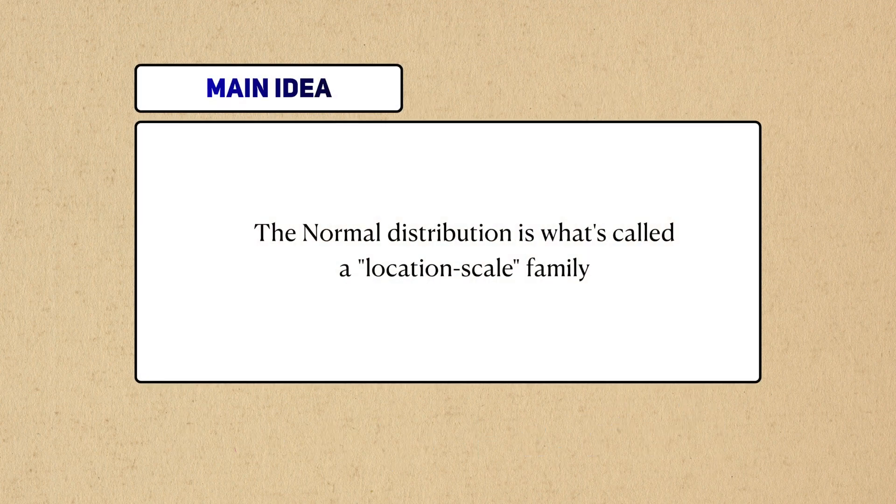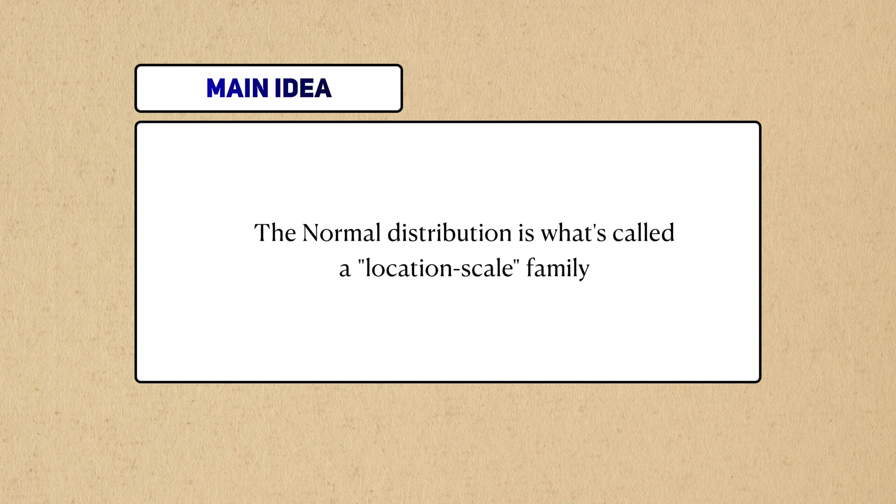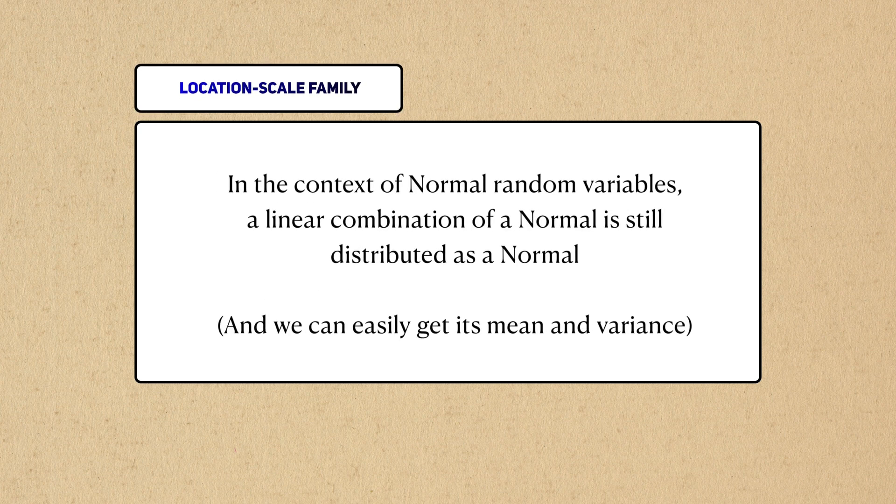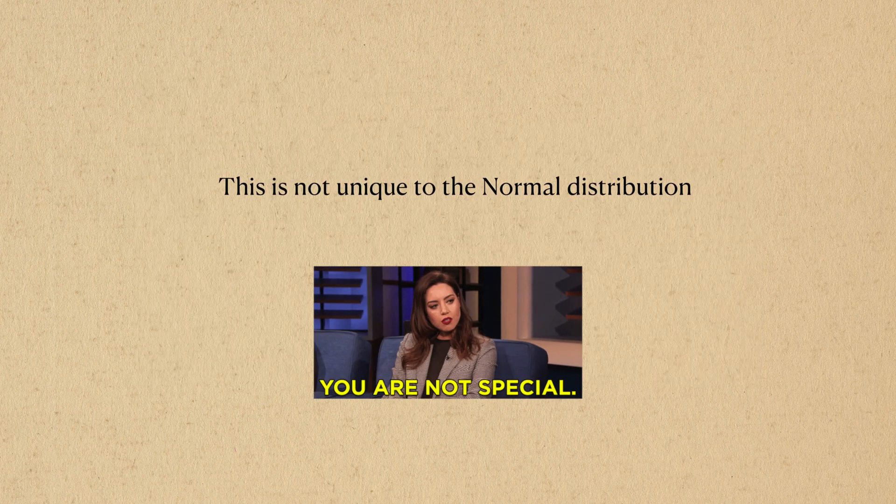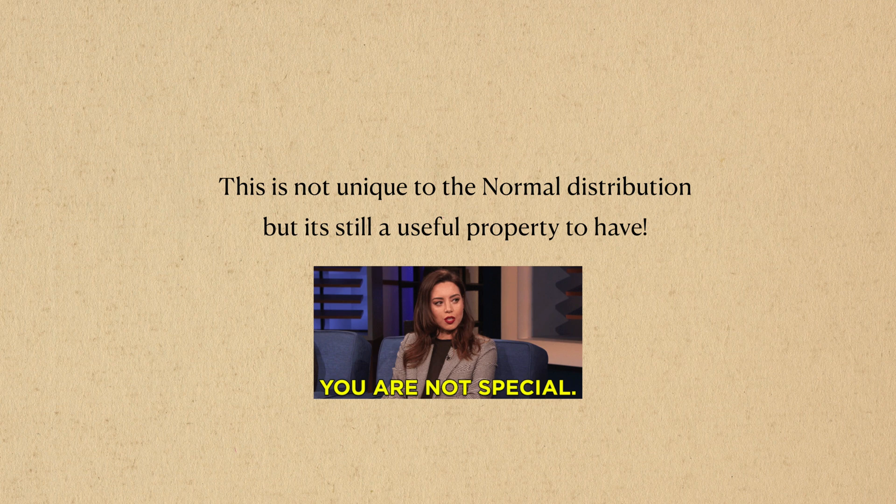For any number a and positive number b, the resulting transformation is still a normal random variable. The normal distribution is what's called a location scale family. That is, linear combinations of normal random variables are still normal. The normal distribution is not the only parametric family to have this property, but it's still important that it has it.